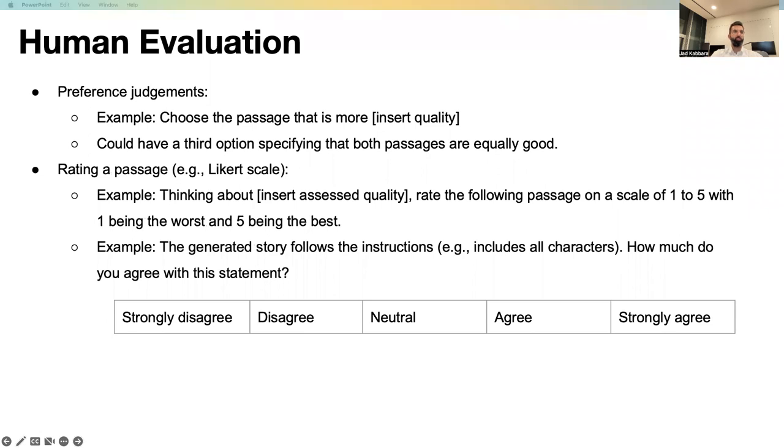Another way to carry out human evaluation is by rating a passage. For example, we can ask the worker the following: thinking about a quality, for example coherence, rate the following passage on a scale of 1 to 5, with 1 being the worst and 5 being the best.